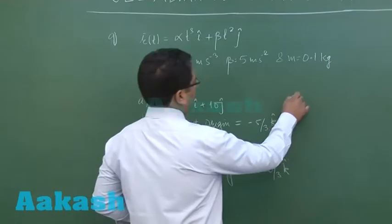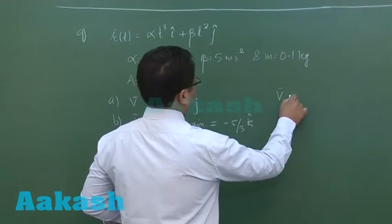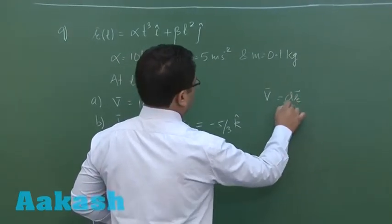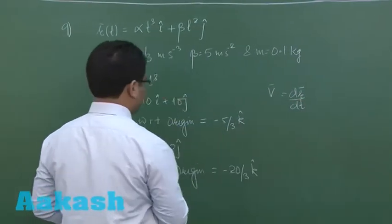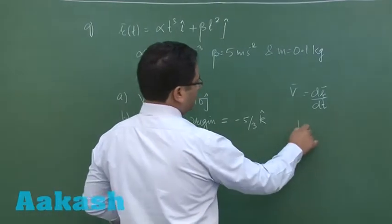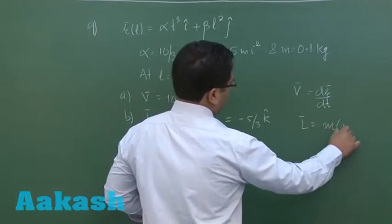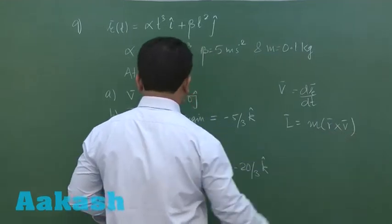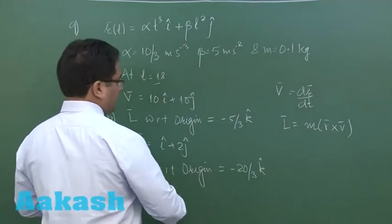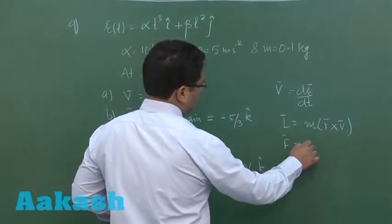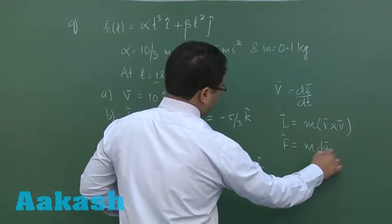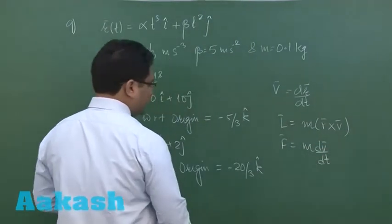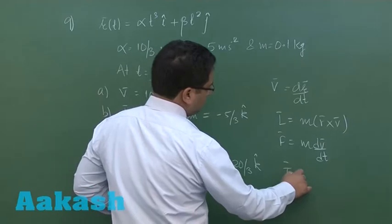So straightforward, so I will not be giving much attention to this. The velocity is dr by dt, angular momentum with respect to origin would be mr cross v and you can put the time, and the force would of course be m dv by dt and finally the torque would be dl by dt.